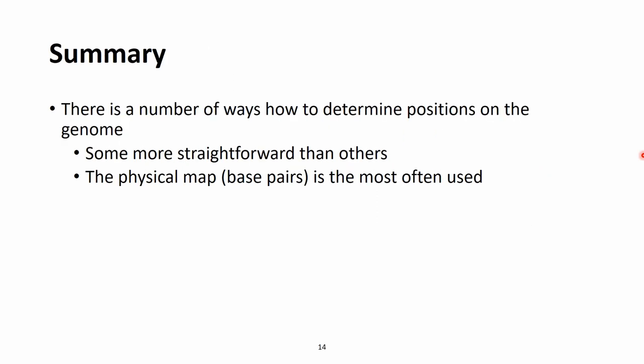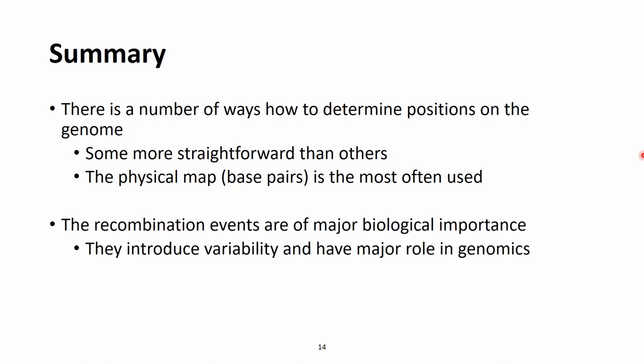As always, I want to wrap up this presentation by a short summary. We spoke about different ways how to determine positions on the genome. Some are more straightforward than others, with the physical map in base pair positions being the one that is more often used. We also talked about recombination events and that these have major biological importance. They introduce variability and have a major role in genomics. For today, we would end here.